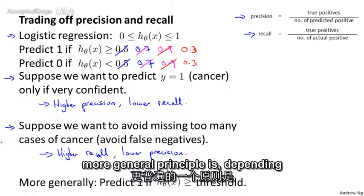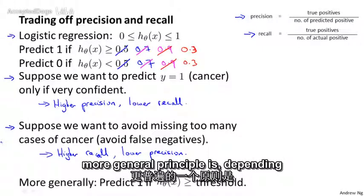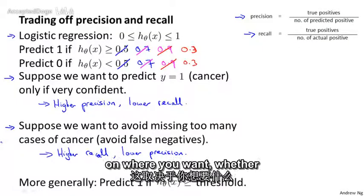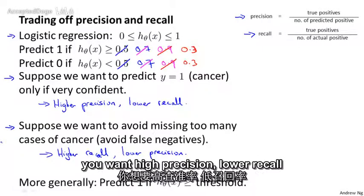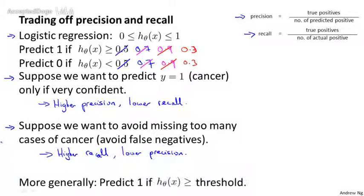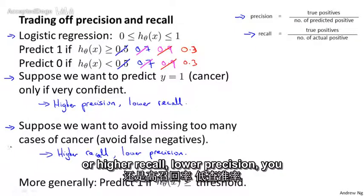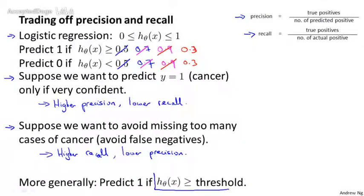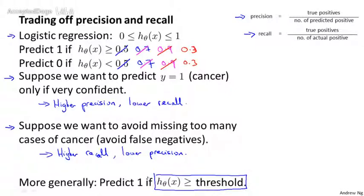The more general principle is: depending on whether you want higher precision with lower recall, or higher recall with lower precision, you can end up predicting y equals 1 when h of x is greater than some threshold.